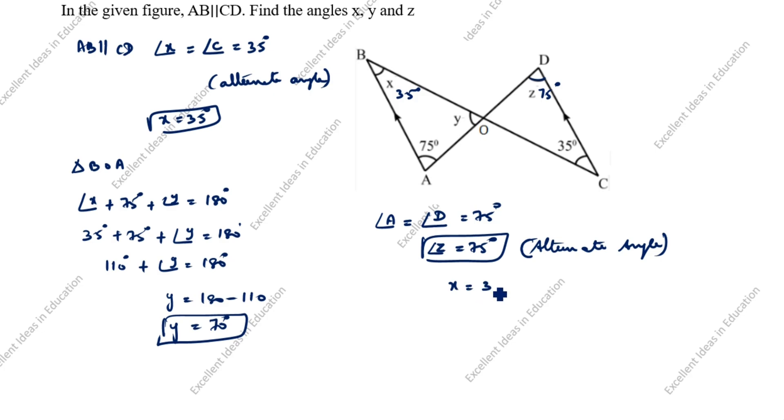So X is 35 degrees, Y is 70 degrees, Z is 75 degrees. Thanks for watching this video.